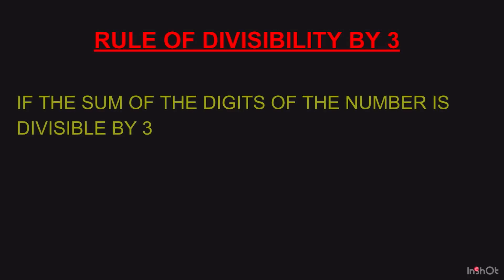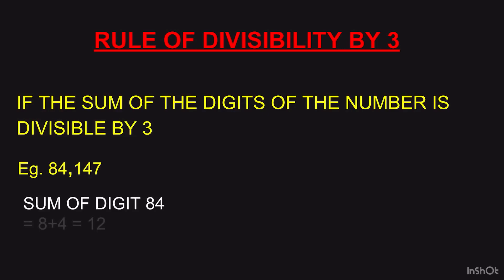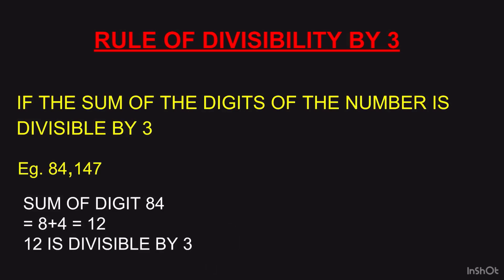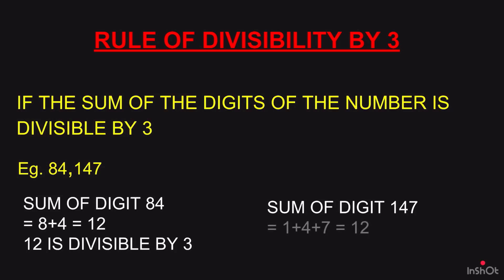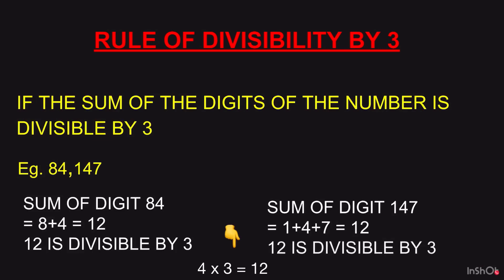Rule of divisibility by 3: if the sum of digits of the number is divisible by 3, then the number is divisible by 3. Example: 84 — sum of digits is 8 plus 4 equals 12, and 12 is divisible by 3 (or further, 1 plus 2 equals 3). So 84 is divisible by 3. Next, 147: 1 plus 4 plus 7 equals 12, which is also divisible by 3. So 147 is also divisible by 3.